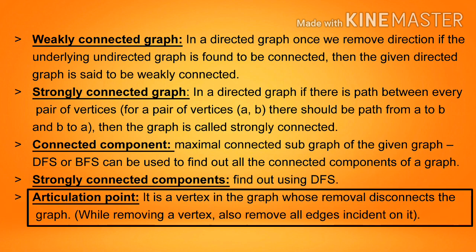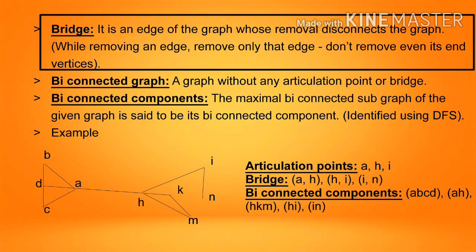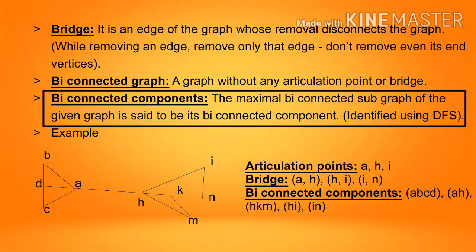Articulation point: it is a vertex in the graph whose removal disconnects the graph. When removing a vertex, also remove all edges incident on it. Bridge: it is an edge of the graph whose removal disconnects the graph. When removing an edge, only that edge is removed — not its end vertices. Biconnected graph: a graph without any articulation point or bridge. Biconnected components are the maximal biconnected subgraphs of the given graph, identified using DFS.